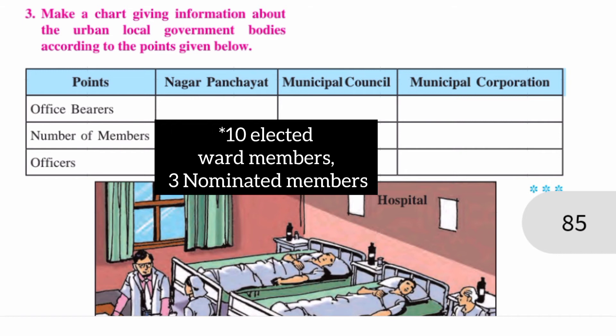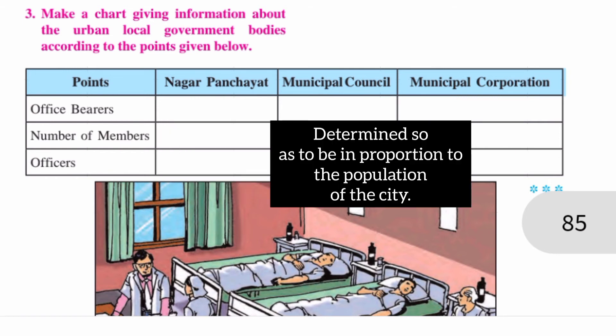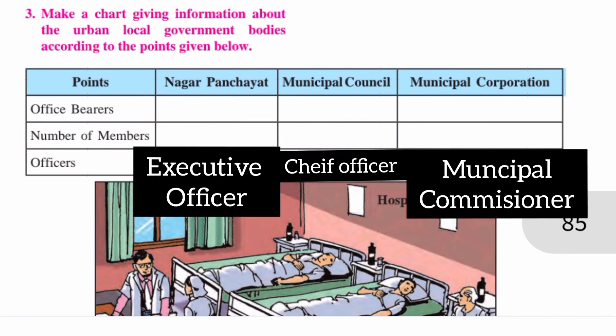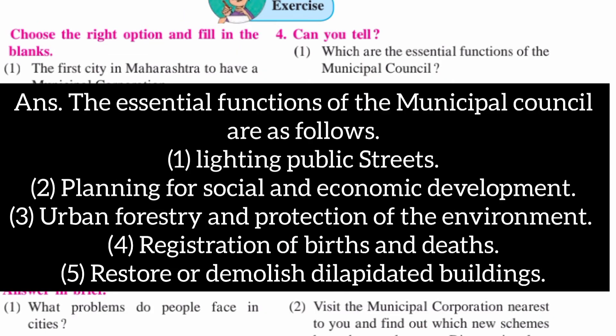Number of members — for Nagar Panchayat: 10 elected ward members and 3 nominated members. For Municipal Council: determined so as to be in proportion to the population of the city. For Municipal Corporation: also determined in proportion to the population of the city. Officers — for Nagar Panchayat: Executive Officer; for Municipal Council: Chief Officer; for Municipal Corporation: Municipal Commissioner.